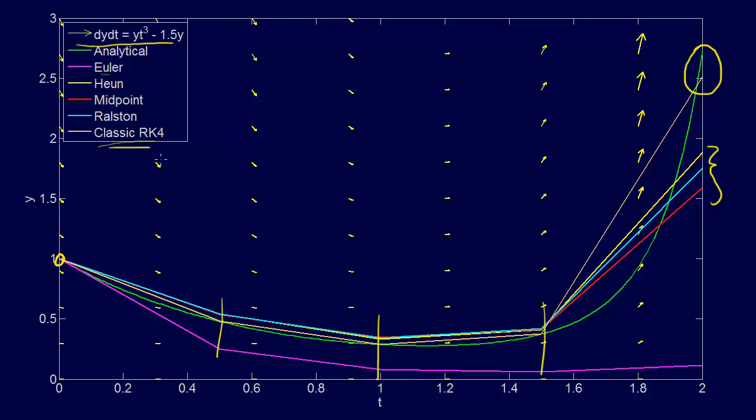So, the fourth order Runge-Kutta definitely is more accurate than all the others, but that makes sense because we're using, in a sense,